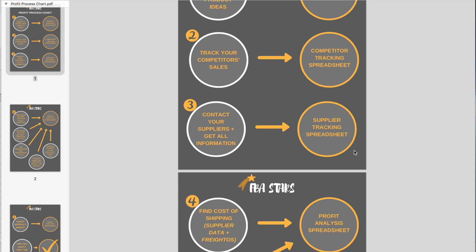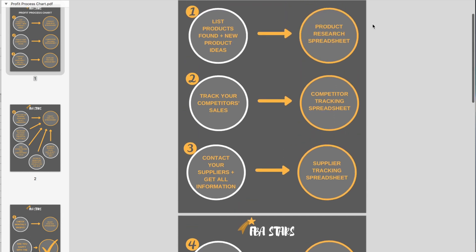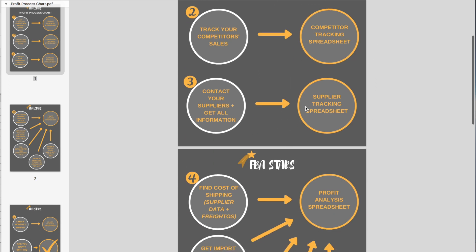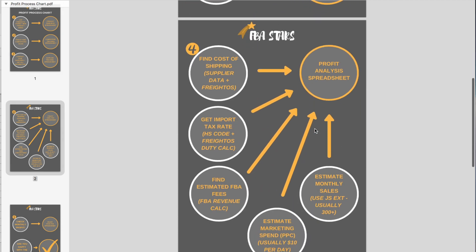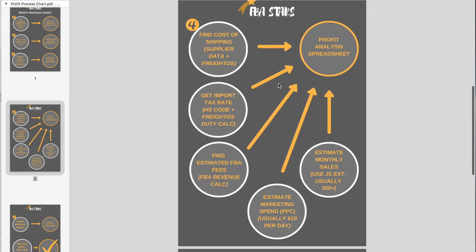So now you've got all of the information on what products you want to go for, you've tracked your competitors and gotten in contact with your suppliers as quickly as possible. Next you need to use the profit analysis spreadsheet and find the cost of shipping.